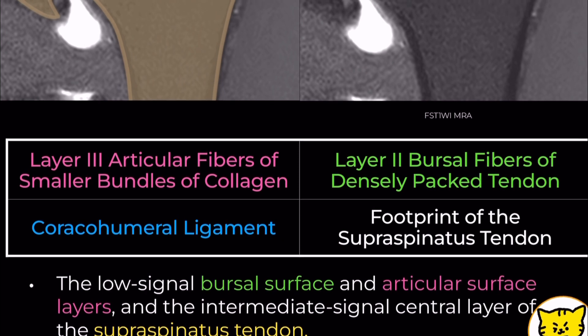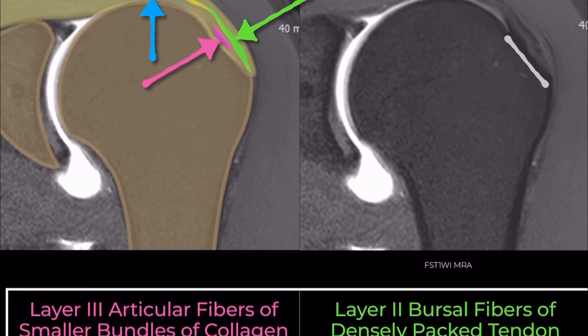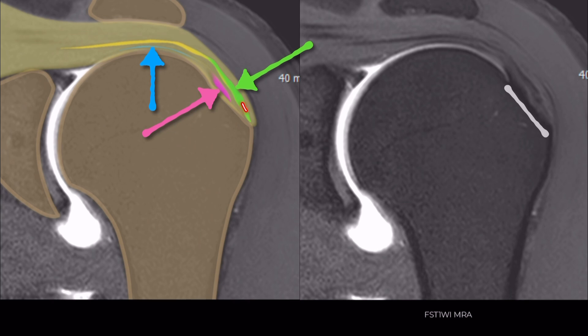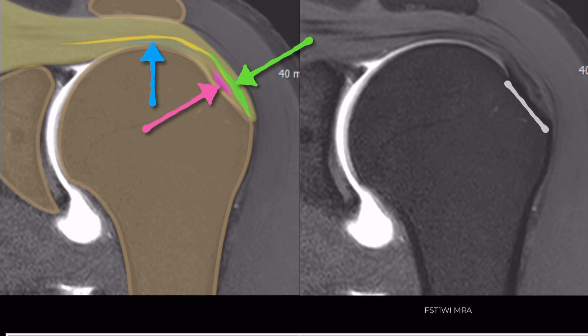Layer 2 — Bursal Fibers: This is a thicker layer, 3–5 mm, composed of parallel-oriented tendon fibers.